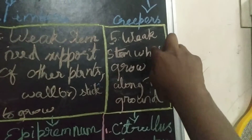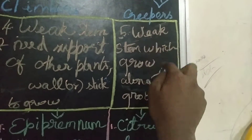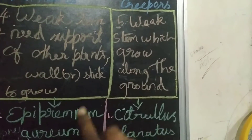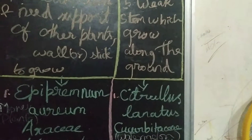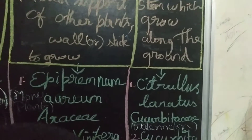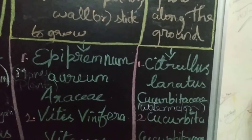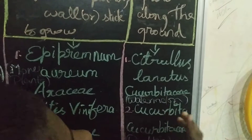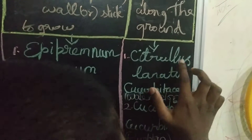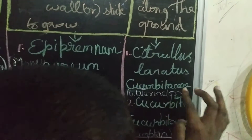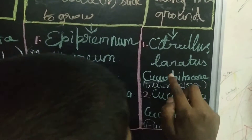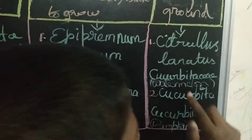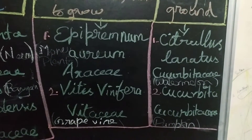The Creepers have a weak stem which grows along the ground. The watermelon binomial name is Citrullus lanatus and the family is Cucurbitaceae.